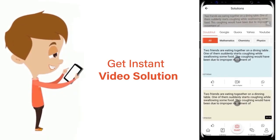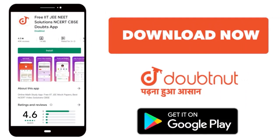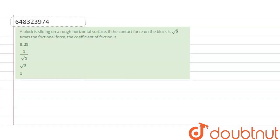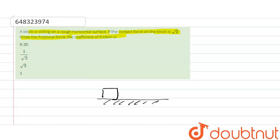Hello students. The question is: if a block is sliding on a rough horizontal surface, and the contact force on the block is root 2 times the frictional force, then what is the coefficient of friction? So the block is sliding on a rough horizontal surface, and the contact force is root 2 times the frictional force.